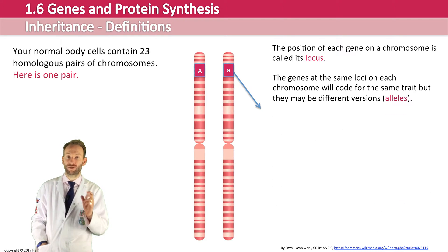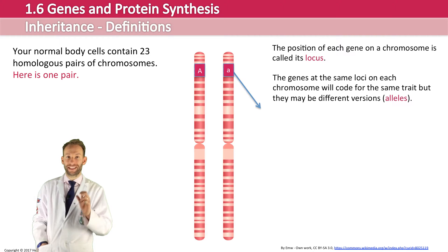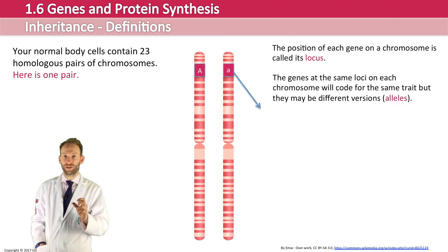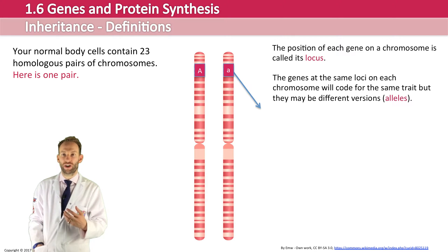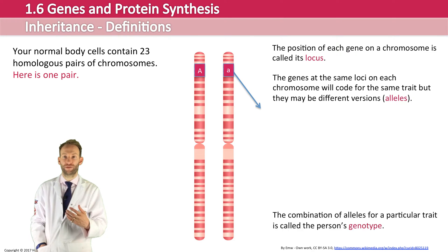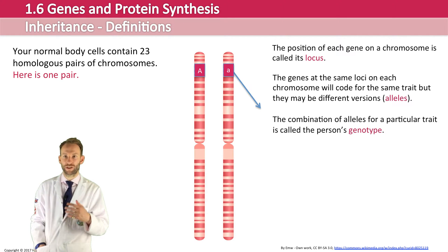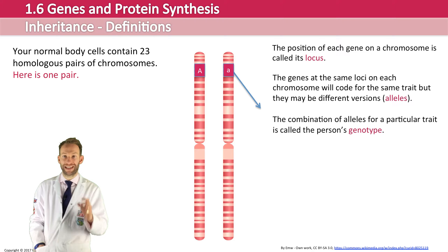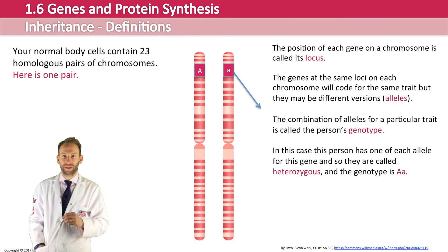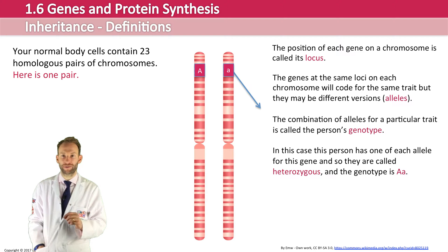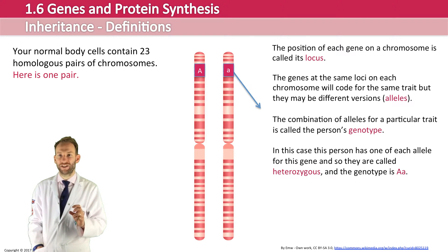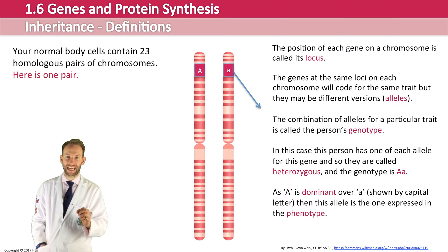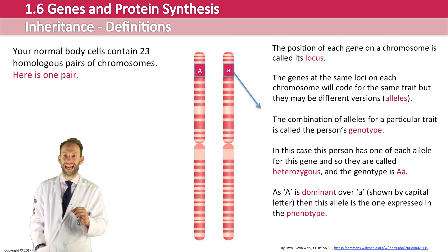Alleles code for the same trait but can be different versions. The combination of those alleles is called the genotype for that individual, and that genotype codes for the particular phenotype. In this case, the person has one of each allele for this gene, so they are heterozygous, and the genotype would be written as big A, little a. Big A is dominant over little a — that's why the dominant allele is written as a capital letter — so big A will be expressed in the phenotype.